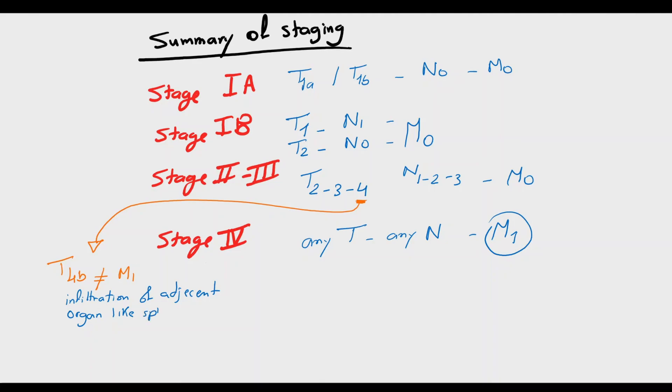We should notice that type T4B, which represents the infiltration of adjacent organs like spleen, doesn't count as distal metastasis.